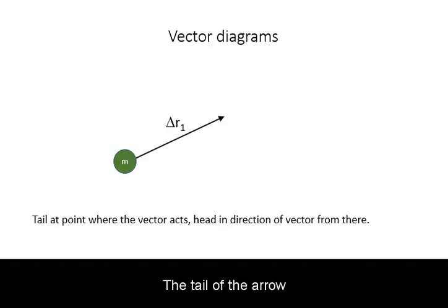The tail of the arrow starts where the vector acts and the head of the arrow, the pointy end, is drawn in the direction of the vector.